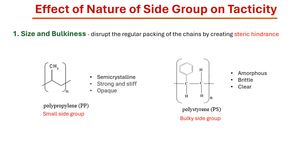So it is difficult to achieve isotactic polystyrene due to the bulky phenyl ring, although Ziegler-Natta polymerization and metallocene polymerization can be used to synthesize isotactic and syndiotactic polystyrene.